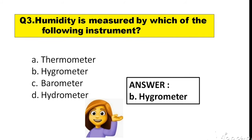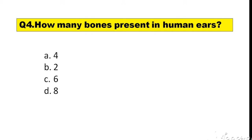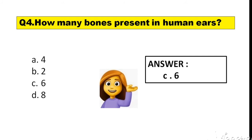Question number 4. How many bones are present in human ears? The options are: A. 4, B. 2, C. 6, D. 8. The right answer is option C — 6.